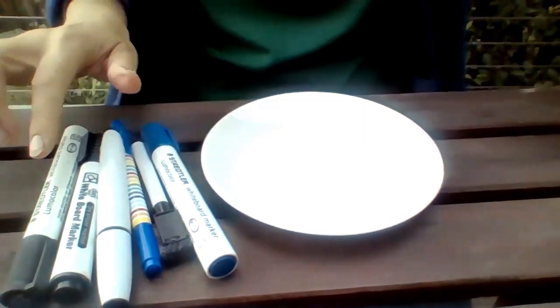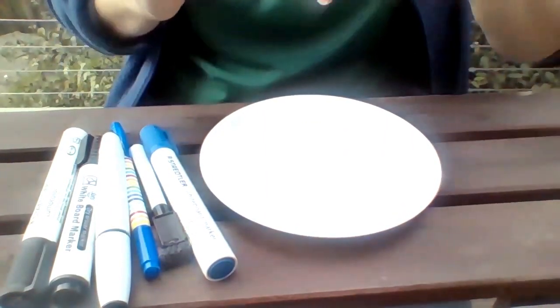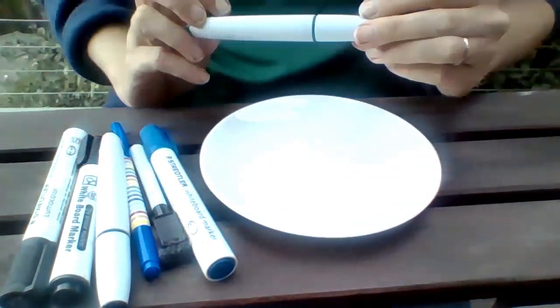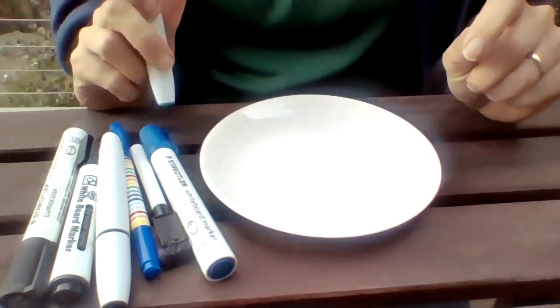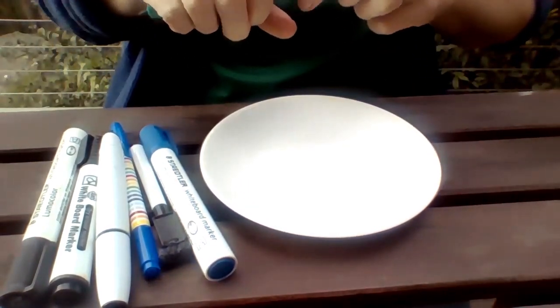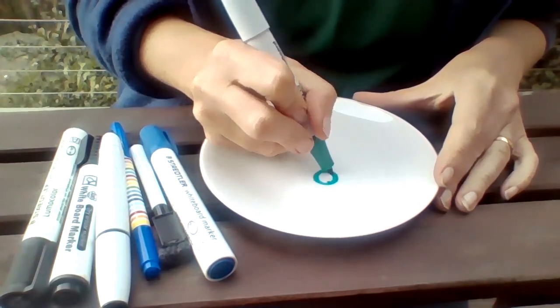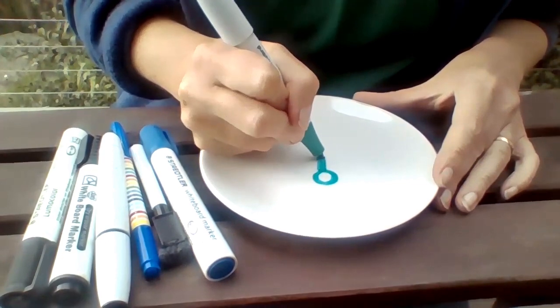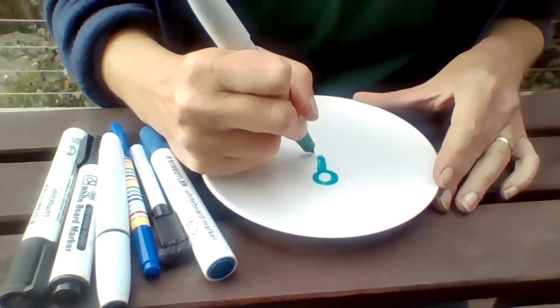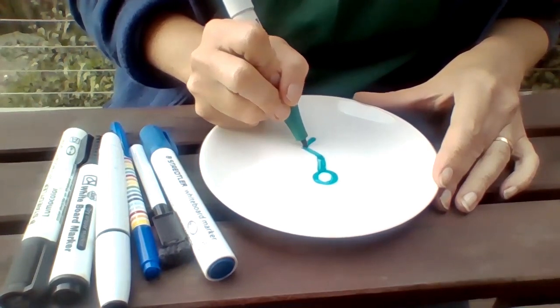Different whiteboard markers work better for this. I tend to find that the green ones of any brand tend to work the best, but you can experiment if you've got a choice. All you need to do is draw a little running man on your plate.